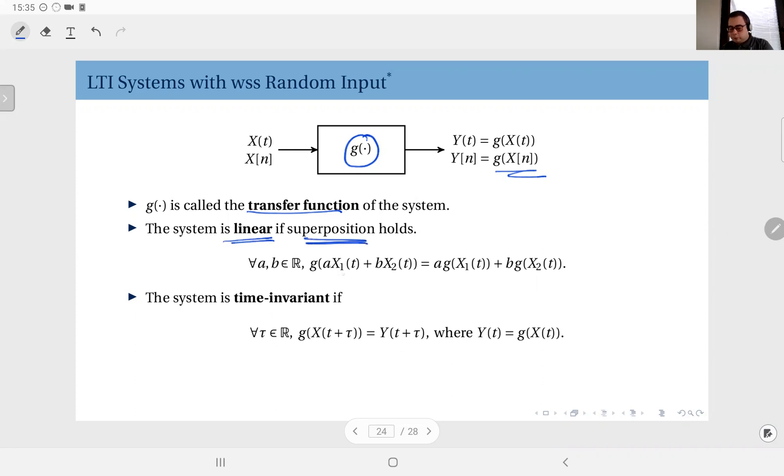If x1 is applied, the output is g(x1). If x2 is applied, the output is g(x2). Then if you combine them as a linear transformation, a times x1 plus b times x2, then the output should be a times the output of x1 plus b times the output of x2. This is in general what defines linearity in the context of systems.